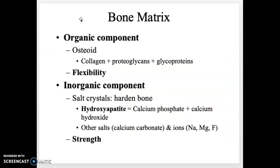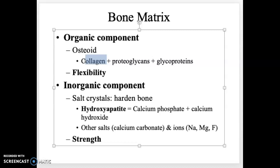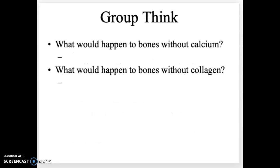The bone matrix is made of two components: an organic component and an inorganic component. The organic component is mainly collagen, which gives bones their flexibility. The inorganic component gives bones their strength through crystals called hydroxyapatite — composed primarily of calcium phosphate and calcium hydroxide. These hydroxyapatite crystals are what give bones their hardness and strength.